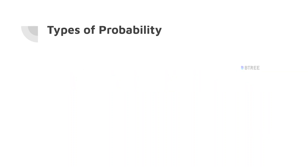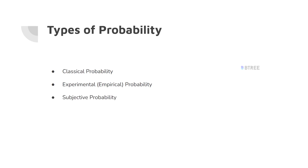Types of probability. There are three types we need to know: first, Classical Probability; second, Experimental or Empirical Probability; and third, Subjective Probability.